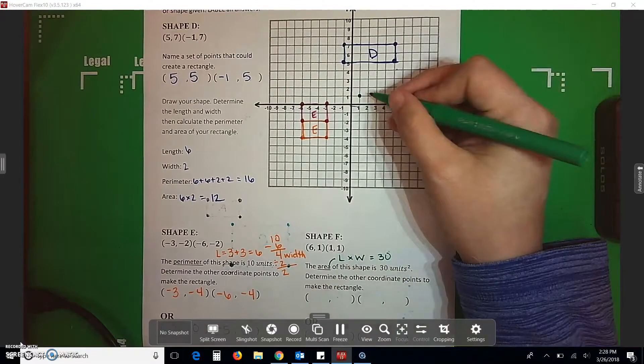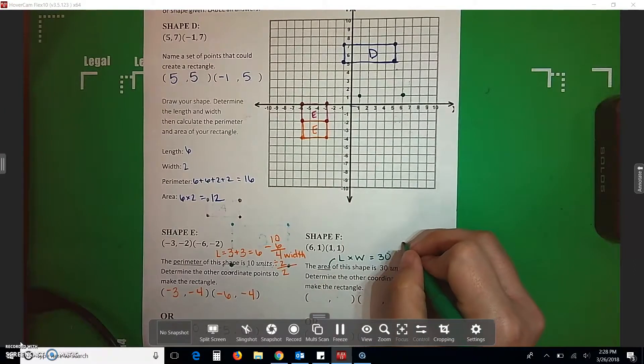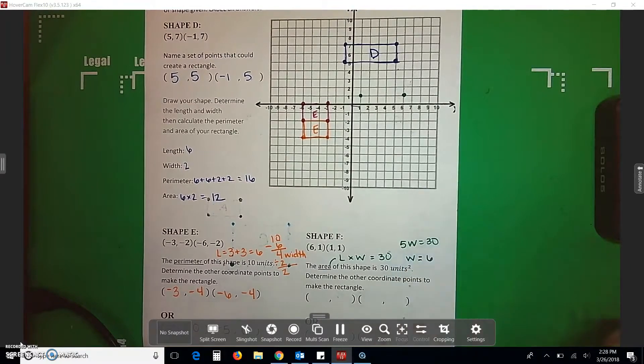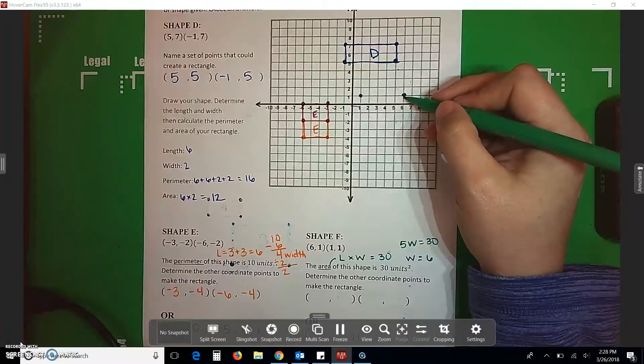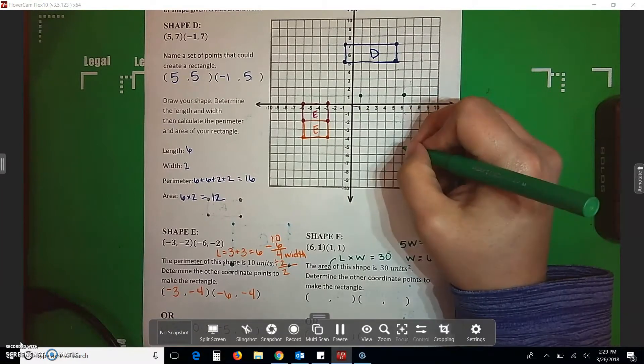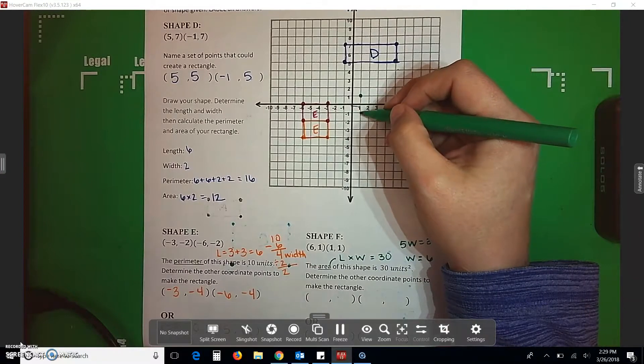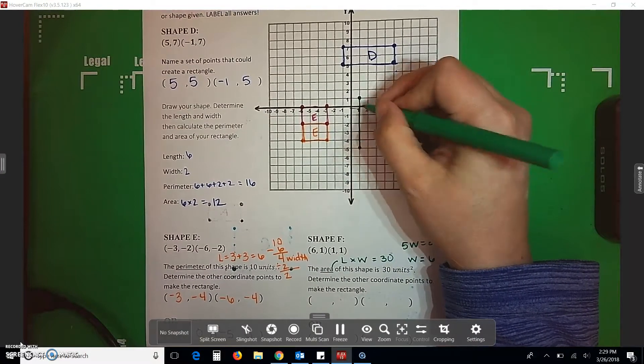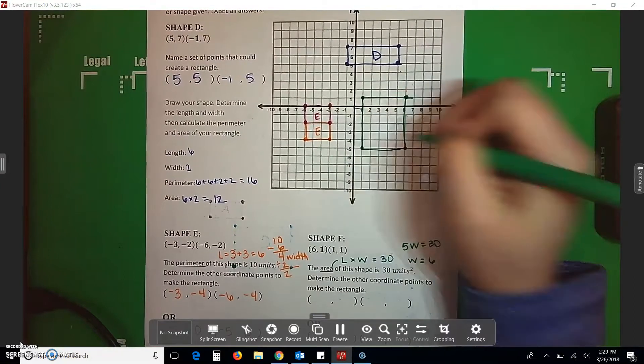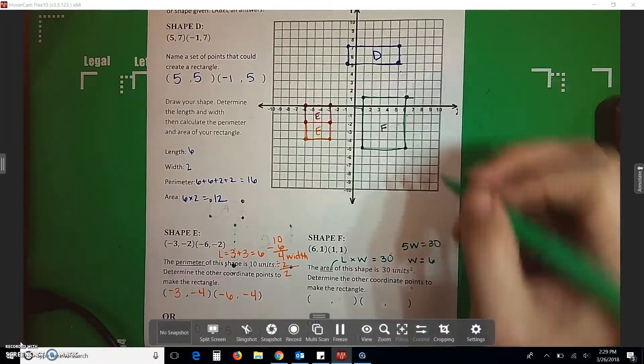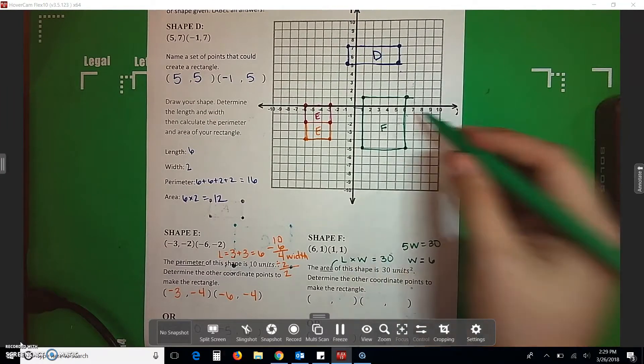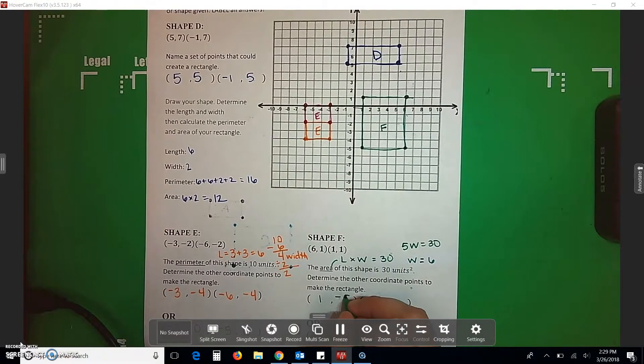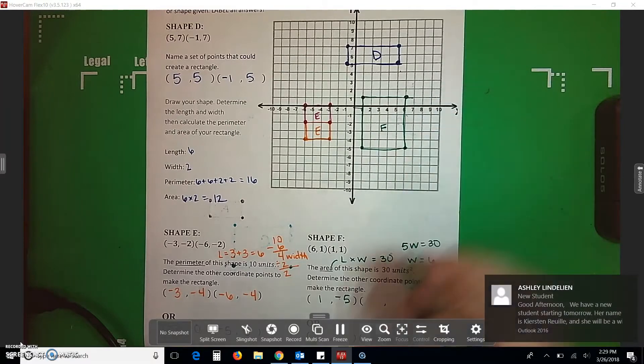And we know that our length is 1, 2, 3, 4, 5. So we have 5W equals 30, which means our W is 6. Our width has to be 6. So I'm going to go 1, 2, 3, 4, 5, 6 down. 1, 2, 3, 4, 5, 6 down. I'm going to connect my dots. I'm going to label this shape F. And it wants to know what my other points were that I used to make this particular one. Well, for my first one, I went over 1, down negative 5. So I've got 1, negative 5. And then I went over 6, down negative 5.